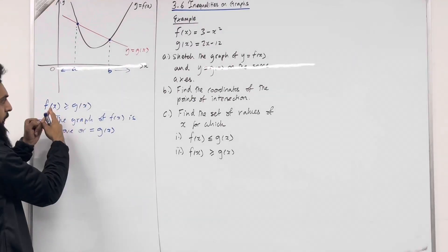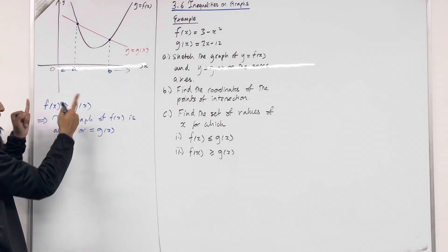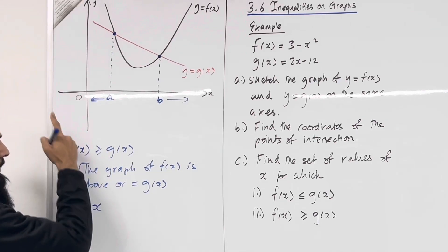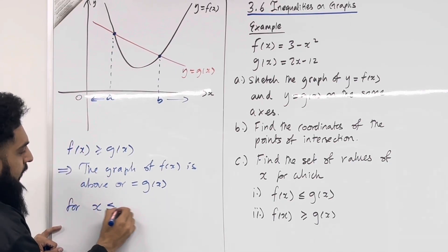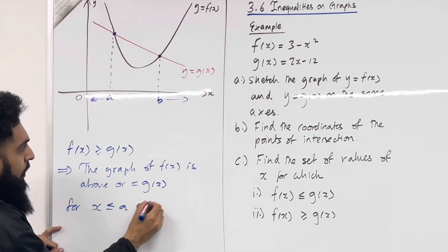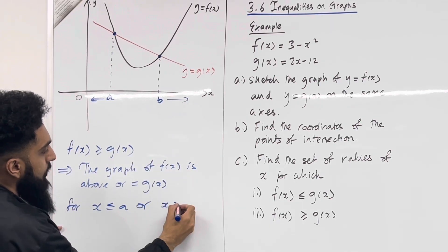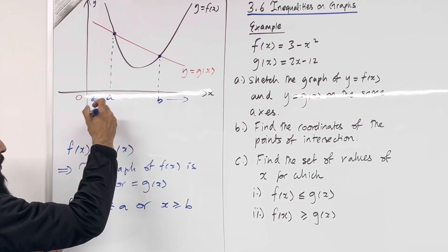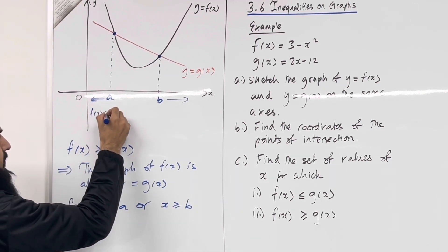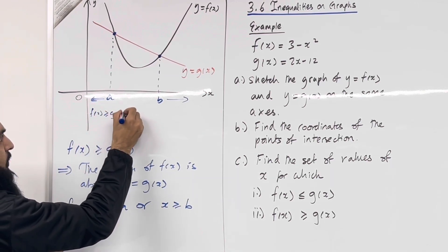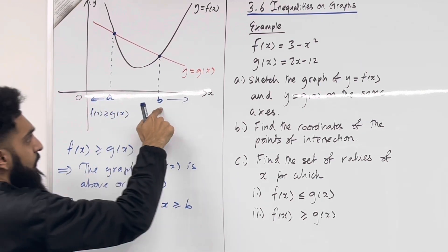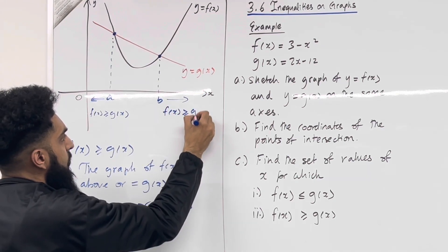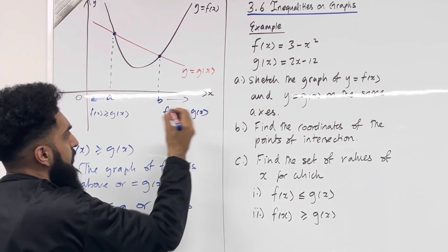So this particular inequality is satisfied for x less than or equal to a, or x greater than or equal to b. Over here we have f(x) ≥ g(x), and over here we also have f(x) ≥ g(x).